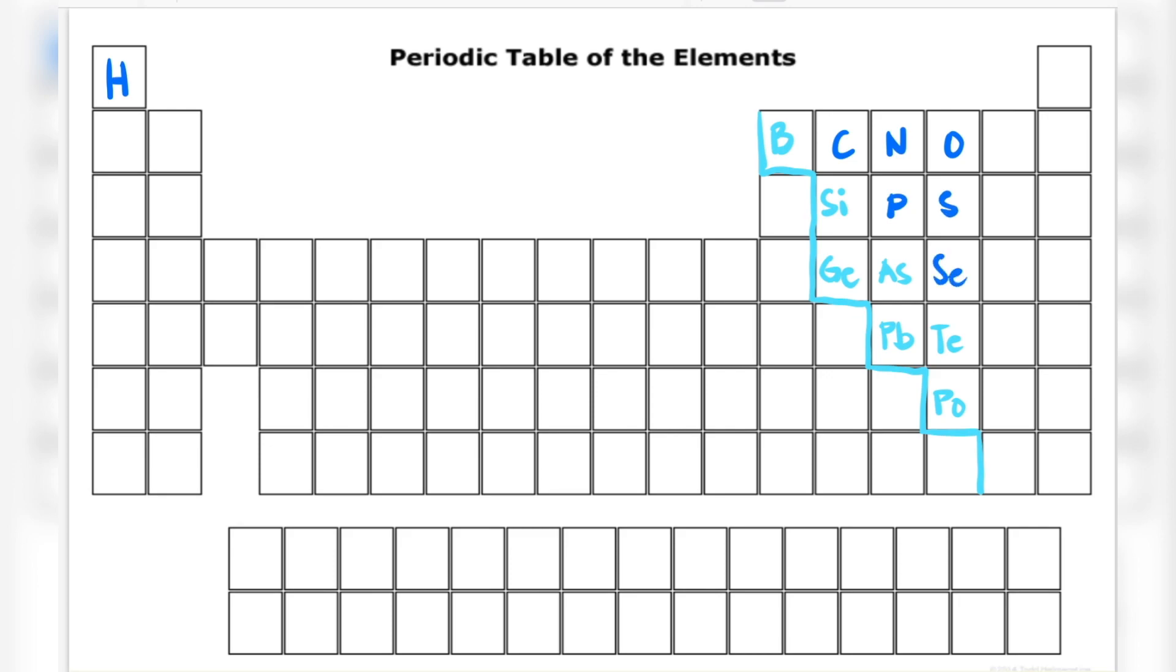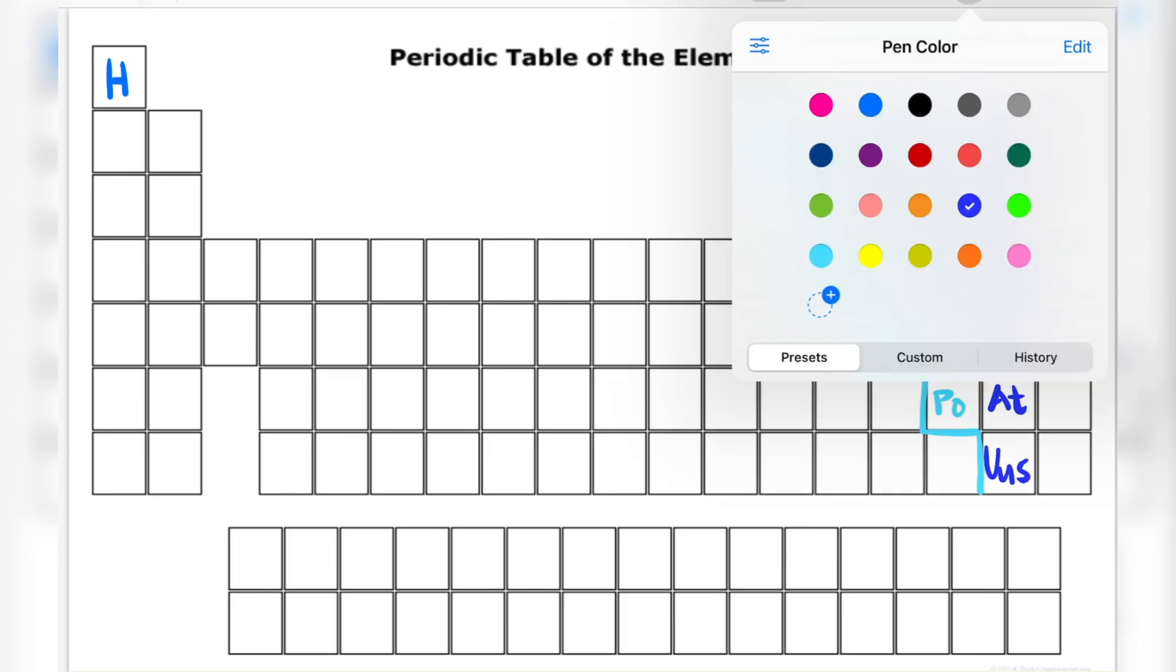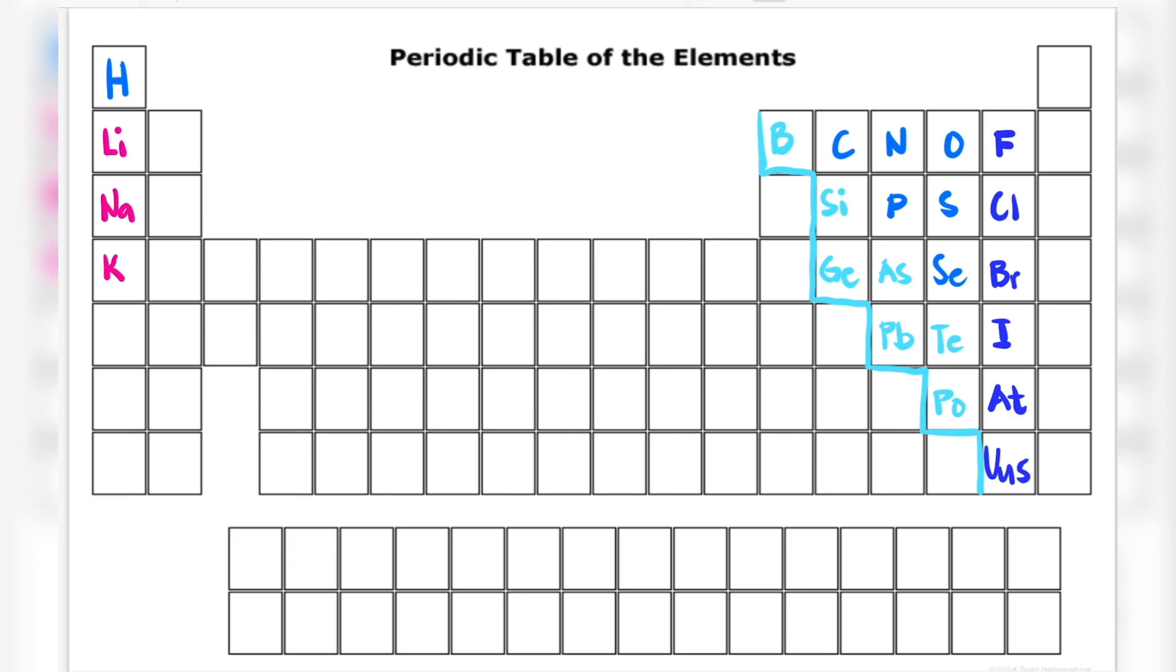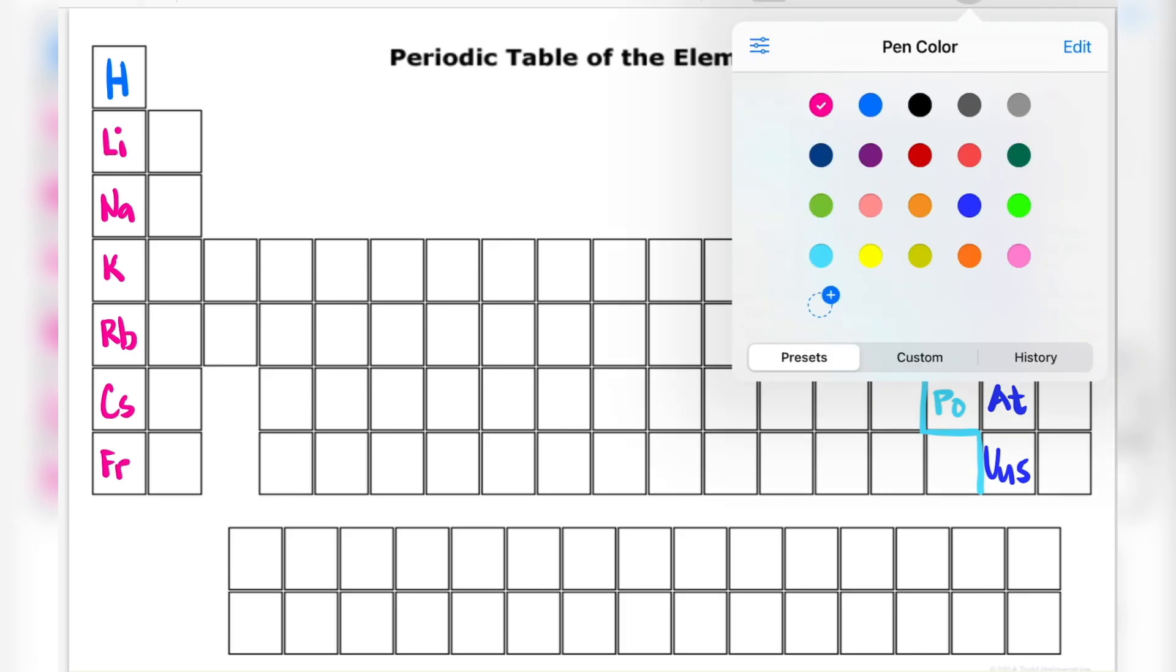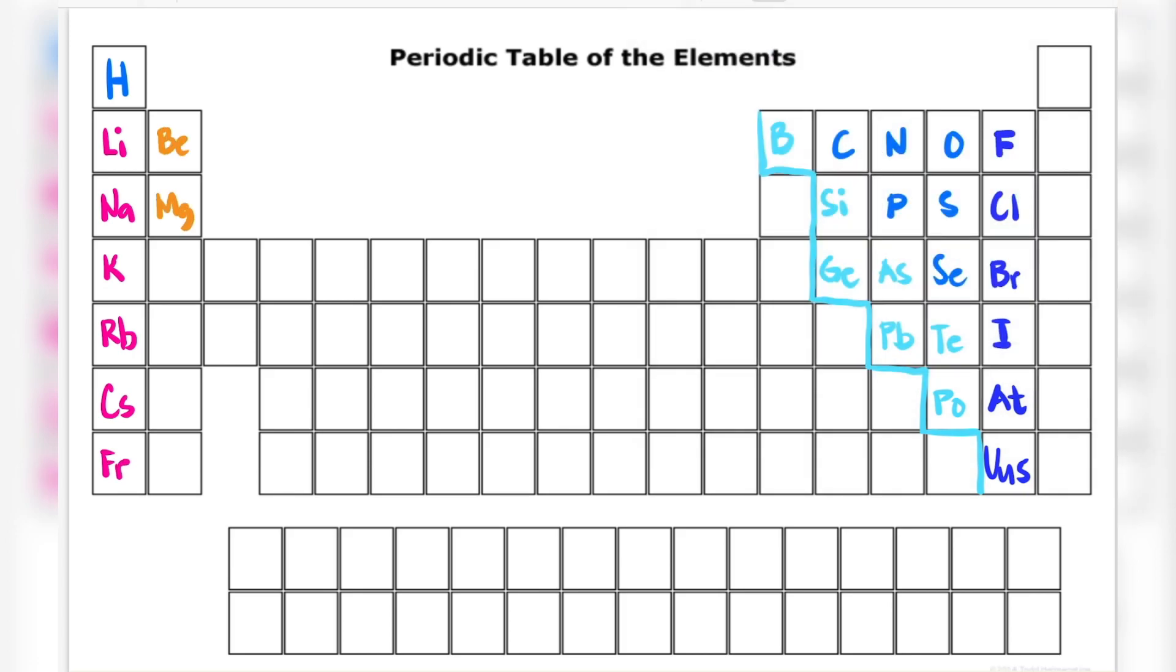So for my metalloids, I coded it as BCC good vibes and sabi po sabi tipo - so that's the blue one, light blue: the boron, the silicon, the germanium, the arsenic, the lead, the tellurium, and the polonium.